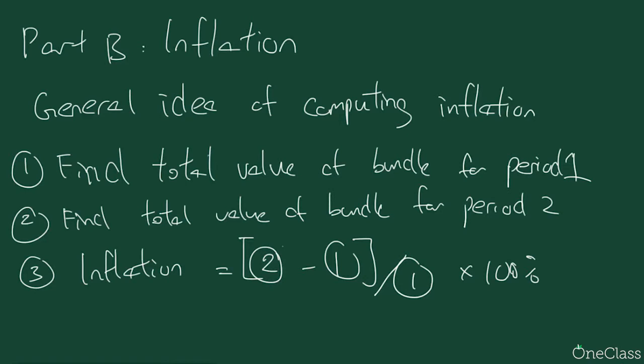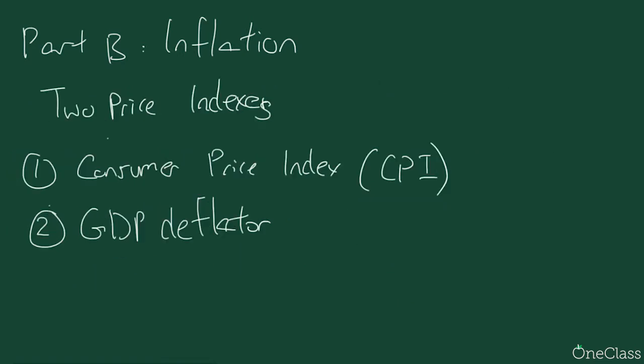We'll be going over concrete examples on how to calculate inflation using either CPI or GDP deflator as the basis. The general idea is: first, find the total value of a bundle for one period; second, find the total value of the bundle for the second period; and lastly, calculate inflation as the total value for the second period minus the total value for the first period, divided by the total value for the first period, times 100%. There are two types of price indexes which measure inflation.